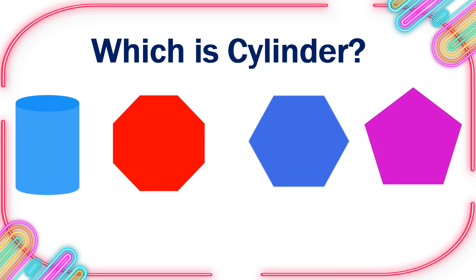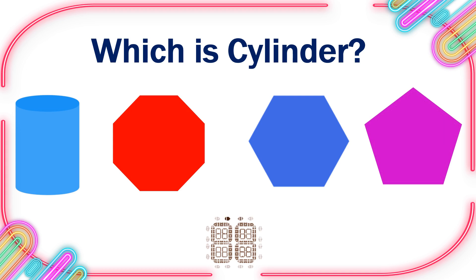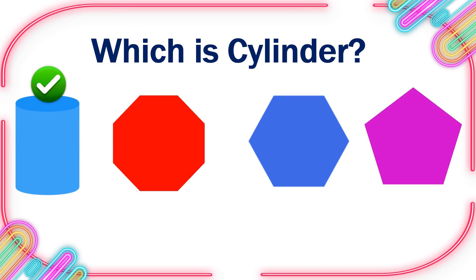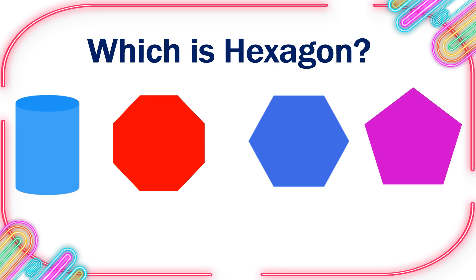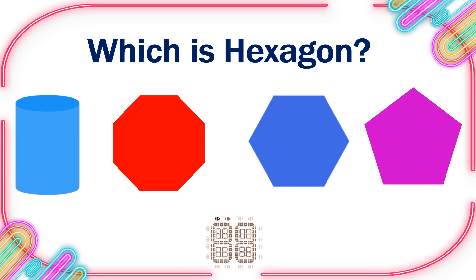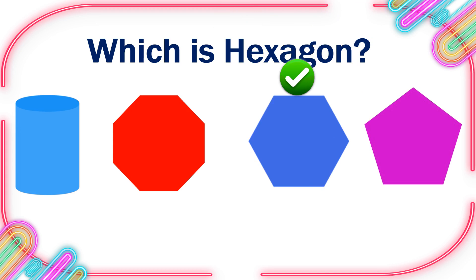Which is Cylinder? 10, 9, 8, 7, 6, 5, 4, 3, 2, 1, 0. This is the right one.